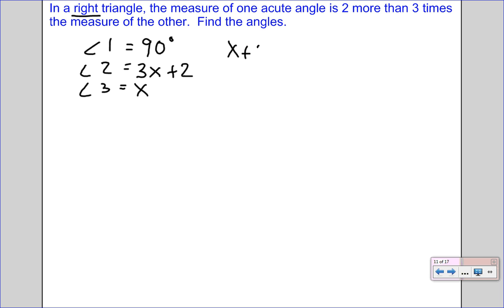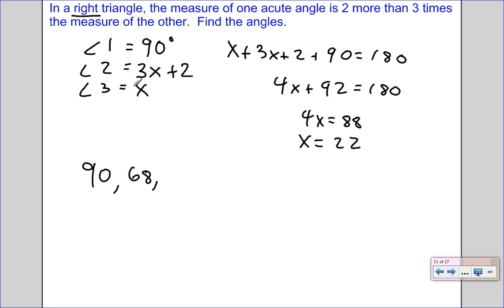So, x plus 3x plus 2 plus 90 equals the 180. 4x plus 92 equals 180. Subtract the 92, so 4x equals 88. So, x equals 22. You can plug that in. You find the first angle is 90. 22 times 3 is 66, plus 2 is 68. And then, just 22 would be your three angles.